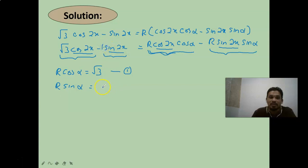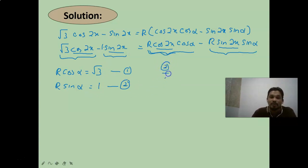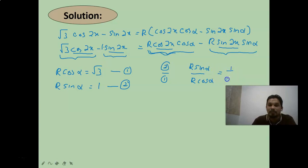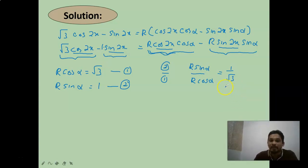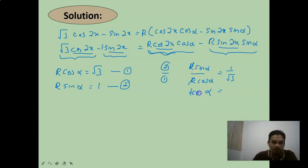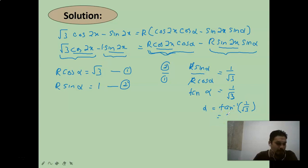Comparing √3·cos2x − sin2x with R·cos2x·cosα − R·sin2x·sinα: matching cos2x gives R·cosα = √3 (equation 1), and matching sin2x gives R·sinα = 1 (equation 2). Dividing equation 2 by equation 1: tanα = 1/√3, so alpha = arctan(1/√3) = π/6.